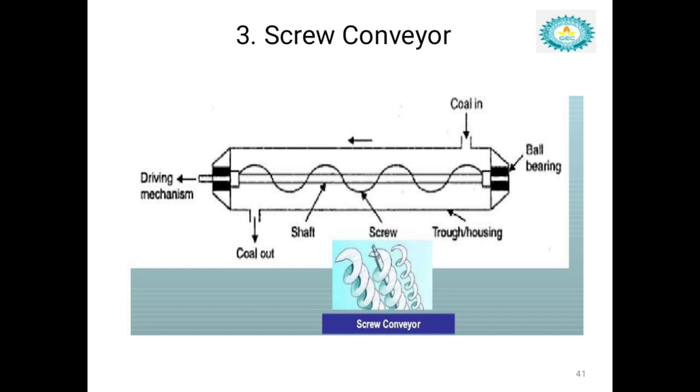Advantages are: it requires minimal space and is cheap in first cost. It is most simple and compact. Disadvantages are: the power consumption is more, and the length of the feed hardly exceeds 30 meters due to torsional strain on the shaft.